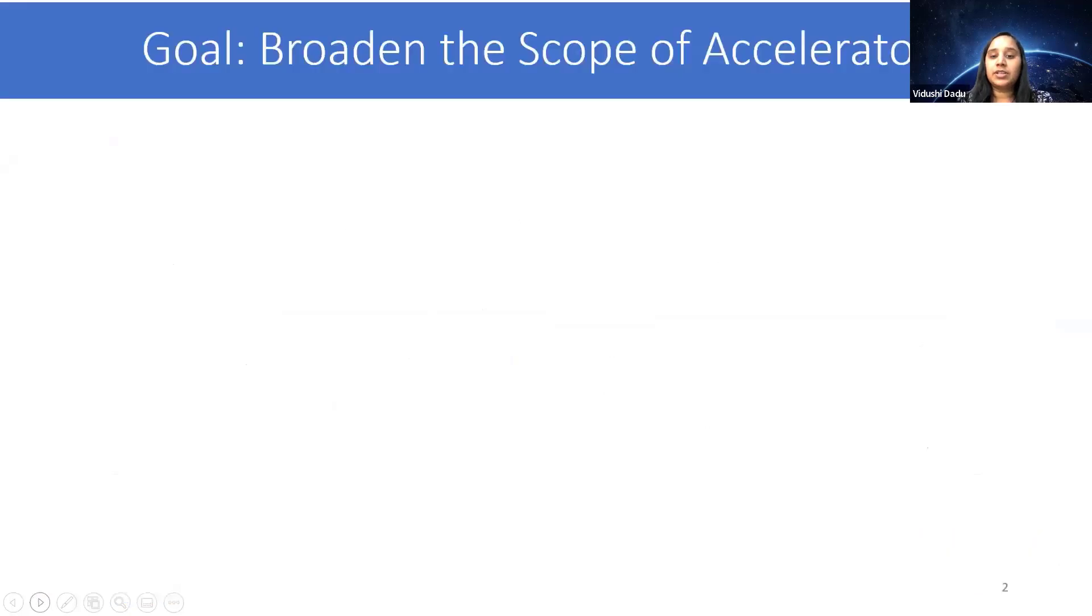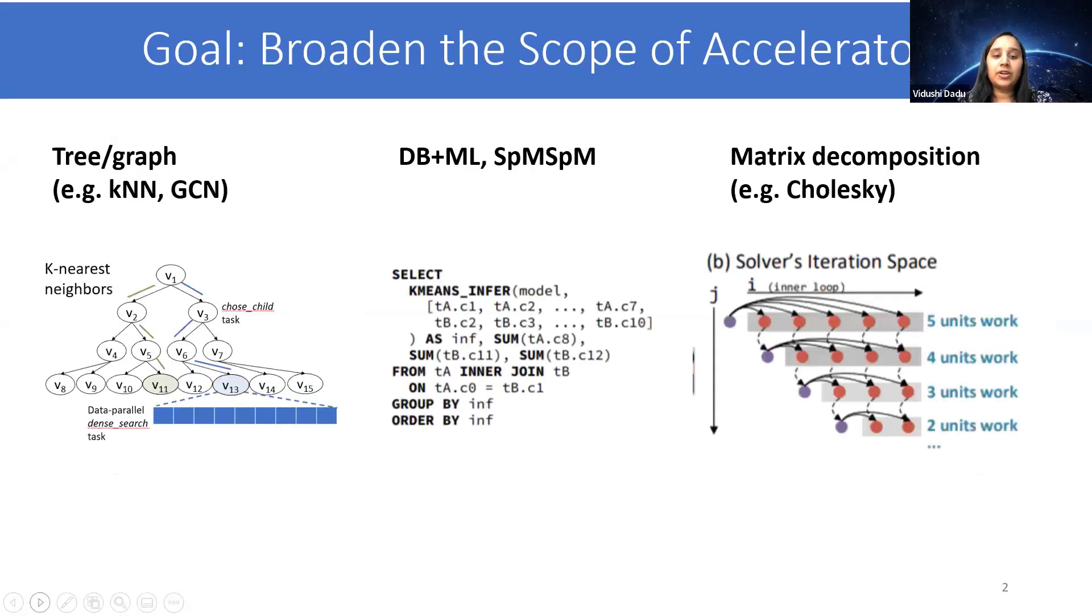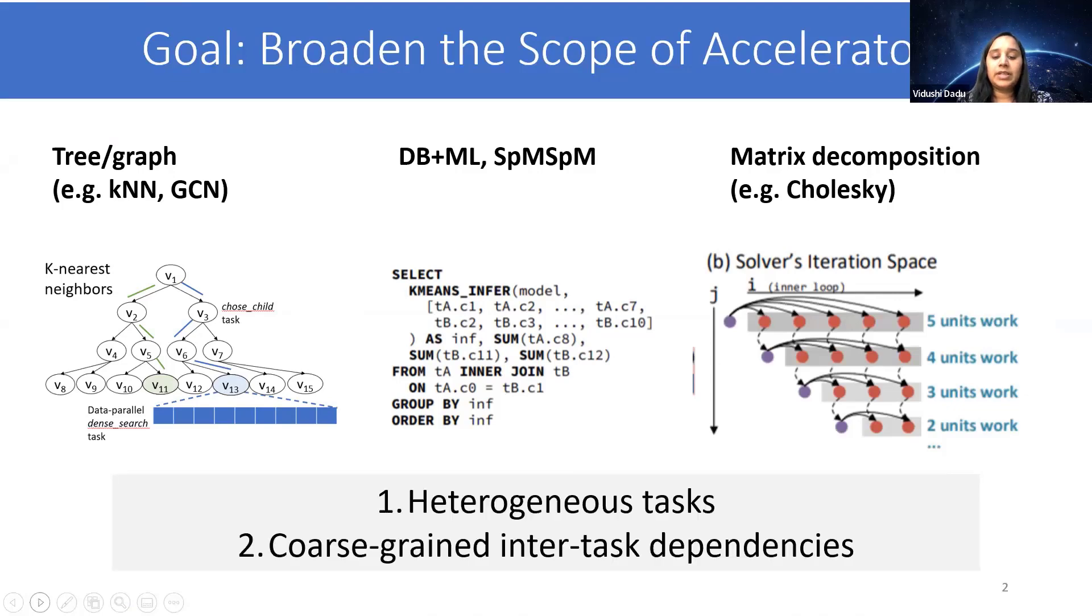Our goal in this work is to broaden the scope of accelerators to workloads with irregular parallelism. These include tree and graph workloads, databases, and matrix decomposition. The common properties across these workloads are heterogeneous tasks of variable size and resource requirements, and inter-task dependencies. Existing task parallel works do not take inter-task dependencies into account, and they miss several opportunities as we demonstrate later.